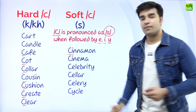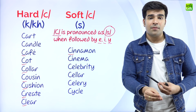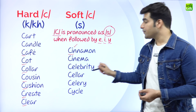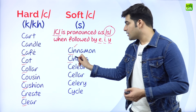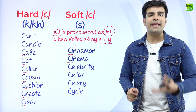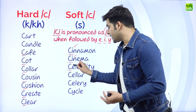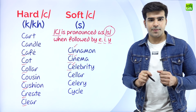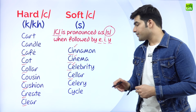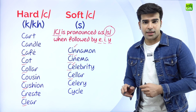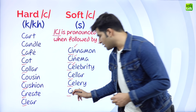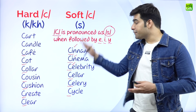Cinnamon — one of the ingredients that we put in the curry. Please repeat after me — cinnamon. After C, what is coming? I. Cinema. Keep on repeating — I love the cinema. Celebrity. Please repeat after me — celebrity. Seller. The star seller. Please repeat after me — seller. Salary. Cycle. Please repeat after me — cycle. This was about the first list.